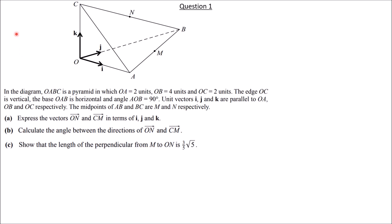Question N. In the diagram, O, A, B, C is a pyramid — a right-angle pyramid — in which OA is 2 units.